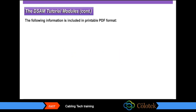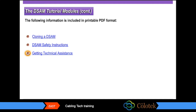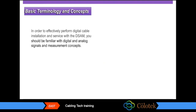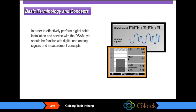In addition to the training modules, further information can be found in printable PDFs. Available PDF files include instructions for cloning a DSAM, DSAM safety instructions, procedures for getting technical assistance, instructions on how to replace the protective lens, warranty information, equipment return instructions, and DSAM specifications. In order to effectively perform digital cable installation and service with the DSAM, you should be familiar with digital and analog signals and measurement concepts.